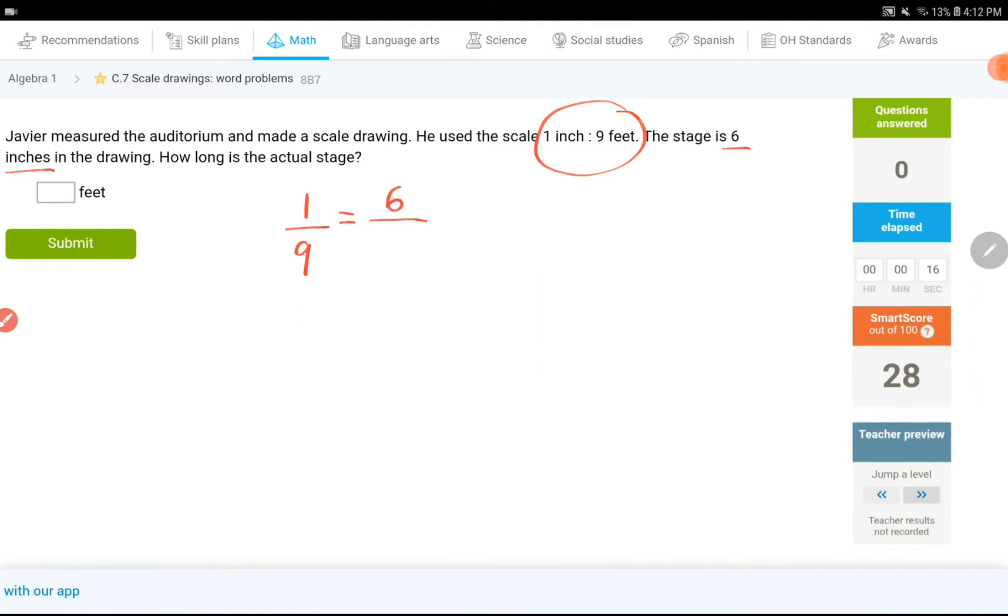So, 6 inches goes at the top, feet goes in the bottom. Let's do cross multiply, x equals 9 times 6 is 54. That would be the answer.